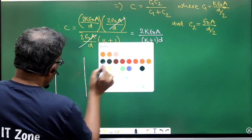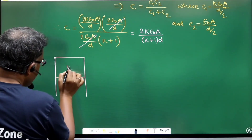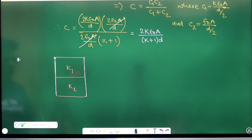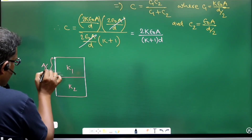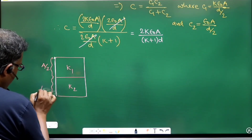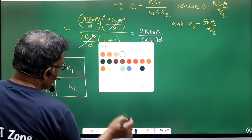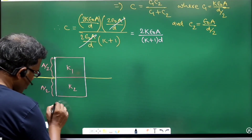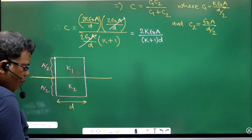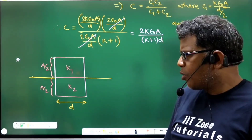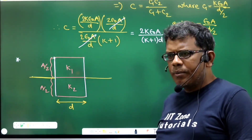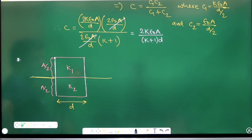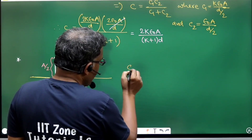Now consider another arrangement: the plate-to-plate separation is d throughout, but the plate area is divided — half covered by dielectric k1 and the remaining half covered by dielectric k2. Both dielectric mediums share the full plate-to-plate separation d. What will be the effective capacitance?